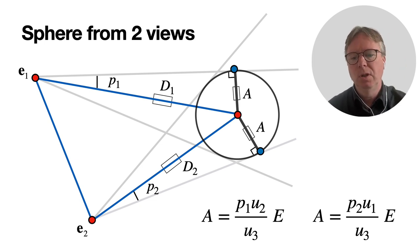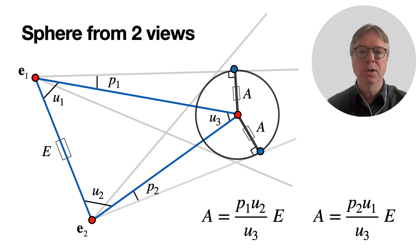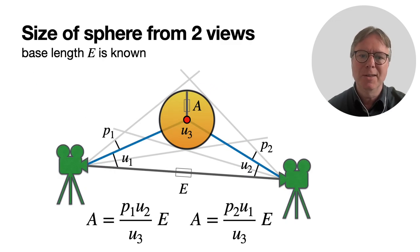Here we have a simple formula. Observe that we don't need d1 and d2 anymore explicitly. We don't need to find them before we can find two expressions for A, and also two outcomes if we do a measurement. Here's the result: you know baseline E, from the left camera you know p1 and u2, from the right camera you know p2 and u1, and the spread between the two viewing directions is u3, and then you have A.